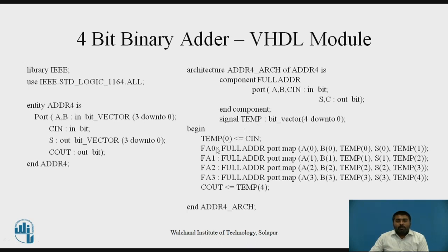After that, for each full adder we have to write the instantiation. There are four full adders, so for each one we have written the component instantiation. The syntax is: write the component name, then port map, then map the signals associated with that component. For full adder F0, we have signals A of 0, B of 0, then temp of 0 as the carry output, S of 0 as sum out, and C in as temp 1. Once all component instantiations are complete, we update the final C out, which is temp of 4, and then end the architecture. This is a short summary of the VHDL code for the 4-bit binary adder.